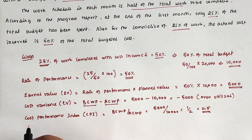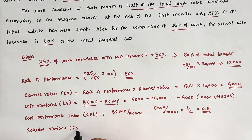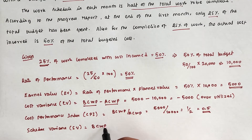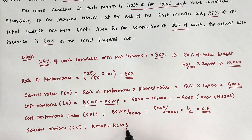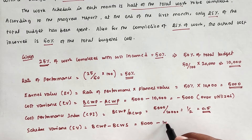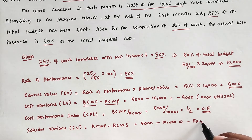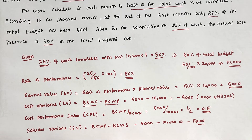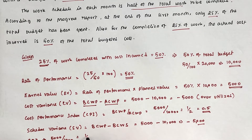Next is Schedule Variance (SV). SV = BCWP minus BCWS, that is Budgeted Cost of Work Performed minus Budgeted Cost of Work Scheduled = 5,000 minus 10,000 = minus 5,000. The project is behind schedule. The Schedule Performance Index (SPI) = 5,000 divided by 10,000 = 1/2, meaning work progress is half of what was scheduled.